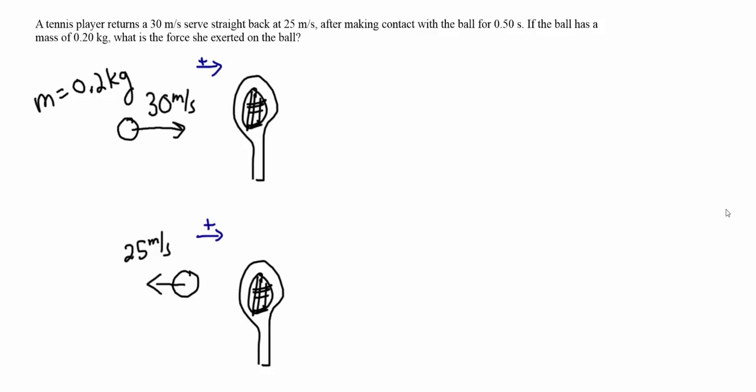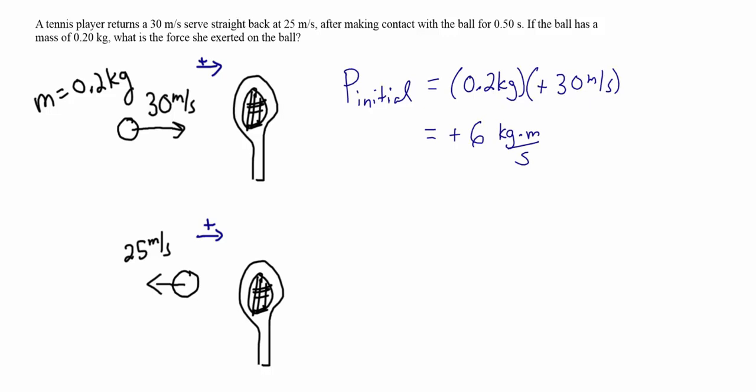The first thing we need to do is calculate the momentum of the tennis ball as it's going towards the racket, and then the momentum as it leaves the racket. The momentum going towards the racket is the mass times the velocity: 0.2 kilograms times positive 30 meters per second. So the initial momentum of the tennis ball is positive 6 kilogram meters per second.